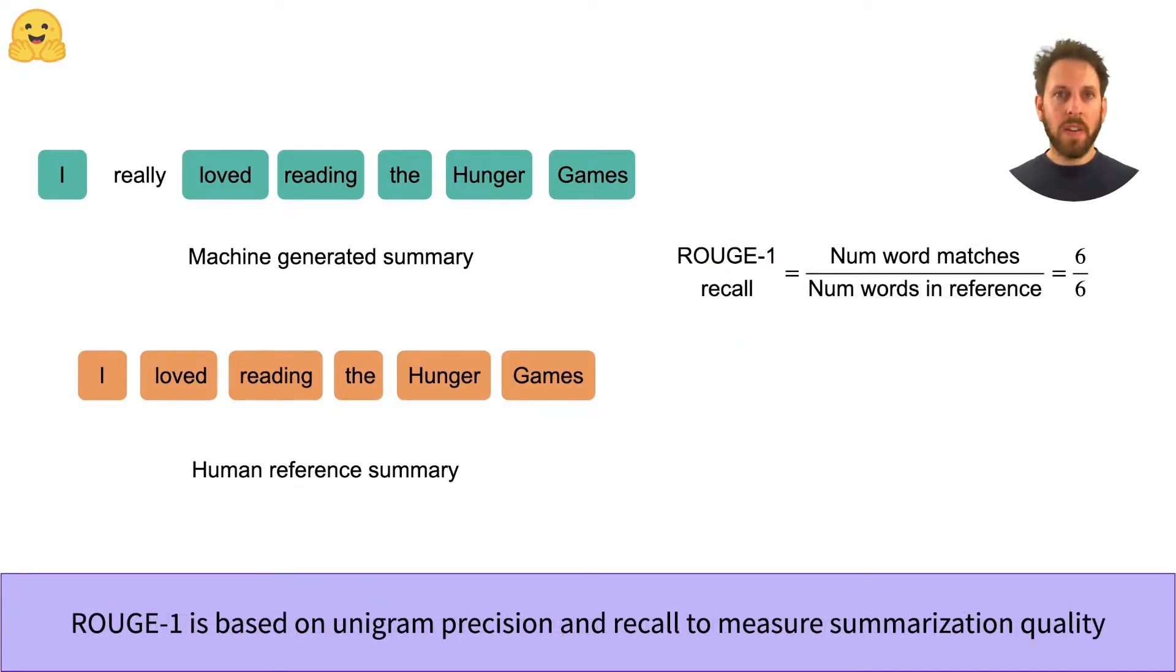Now that we've found our matches, one way to assign a score to the summary is to compute the recall of the unigrams. This means we just count the number of matching words in the generated and reference summaries and normalize the count by dividing by the number of words in the reference. In this example, we found six matching words and our reference has six words, so our unigram recall is perfect. This means that all of the words in the reference summary have been produced in the generated one.